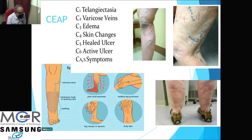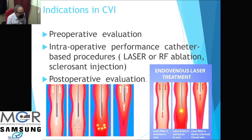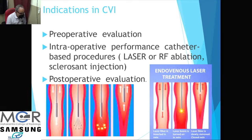The clinical features are listed as per severity in the CEAP classification. Symptoms range from telangiectasia and varicose veins, then edema, then skin changes, and then ulcer formation — either healed or active. Our role in chronic venous insufficiency includes preoperative evaluation, intraoperative guidance for catheter-based procedures (like laser ablation, which we will demonstrate today), and postoperative evaluation of ablation effectiveness.